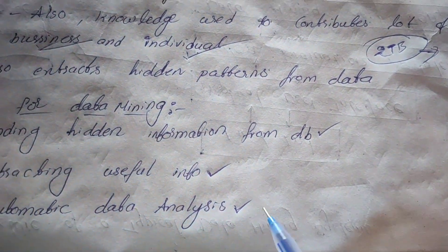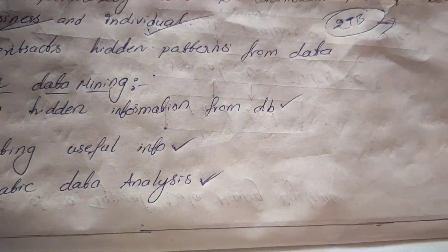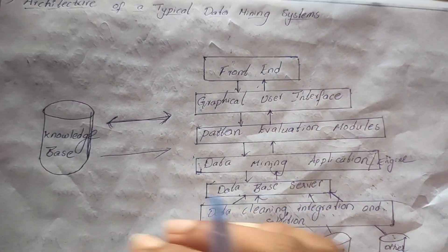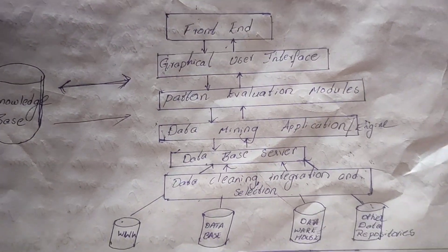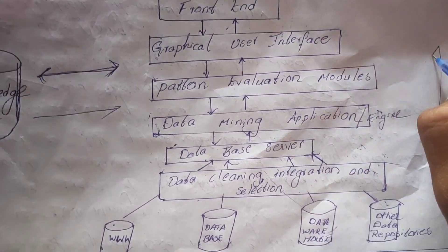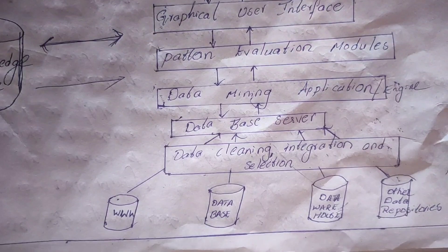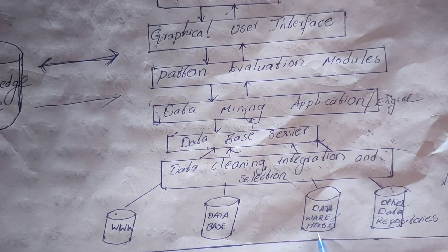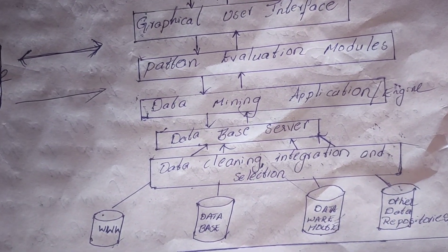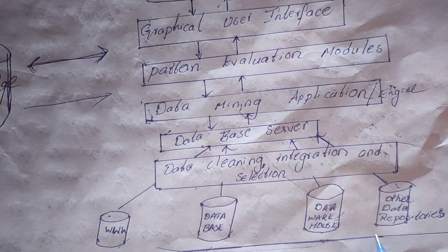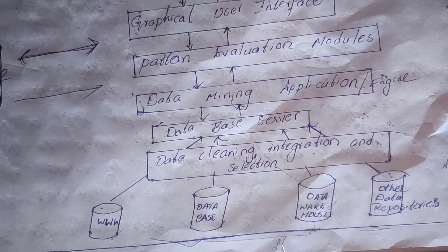Now we'll look at the architecture of data mining and how the process works. The process starts from bottom to top. At the bottom, the data sources include the World Wide Web, databases, data warehouses, and other data repositories. All this data can be extracted from sources like flat files.